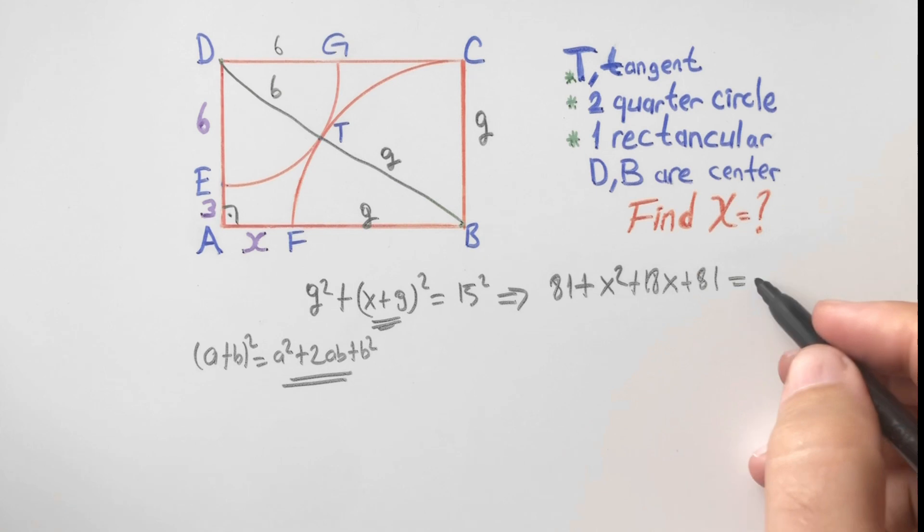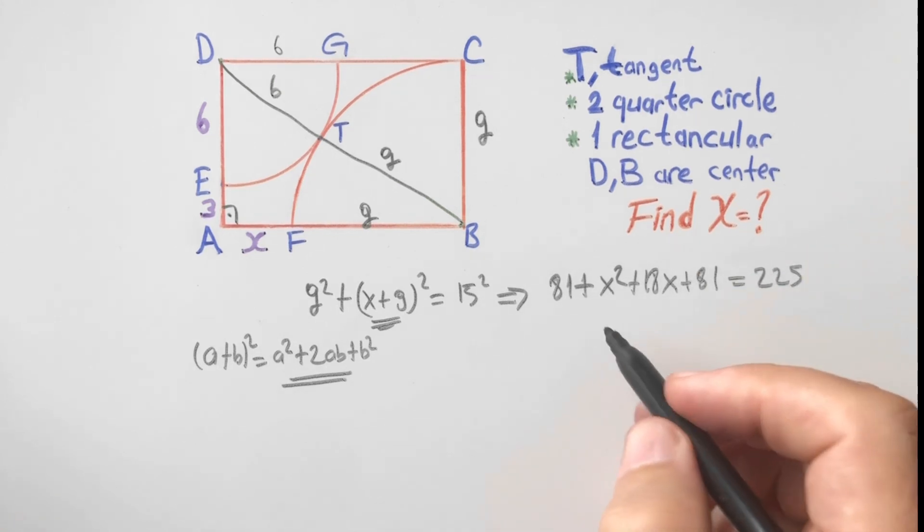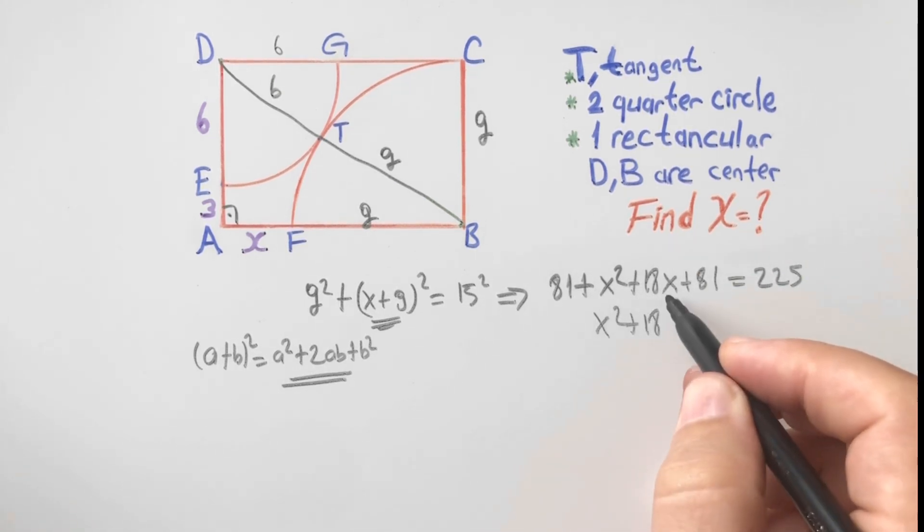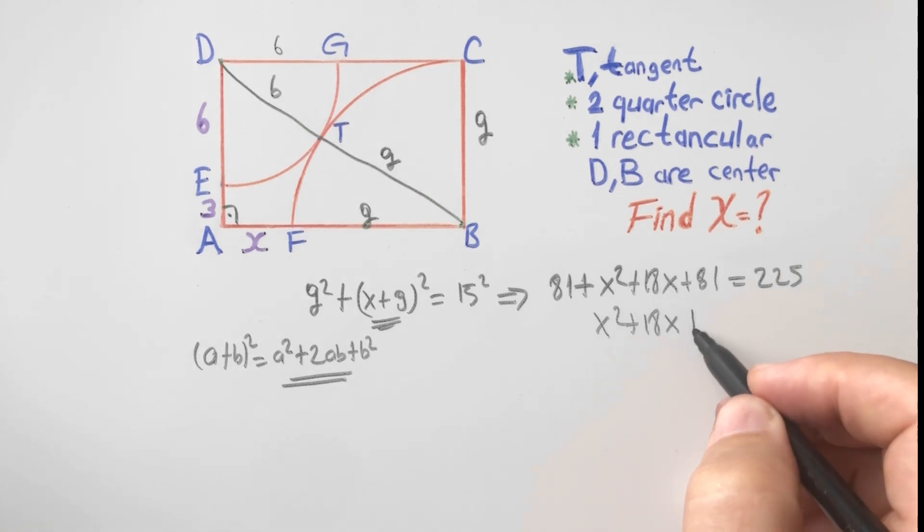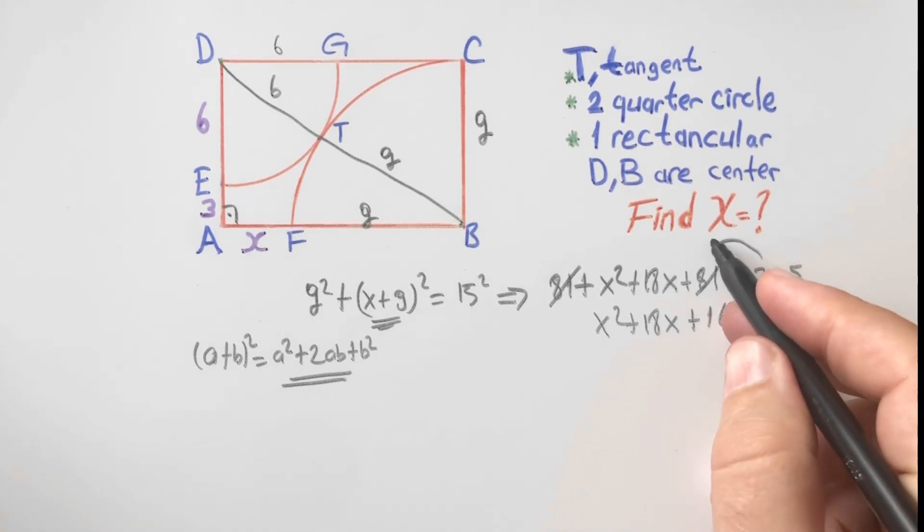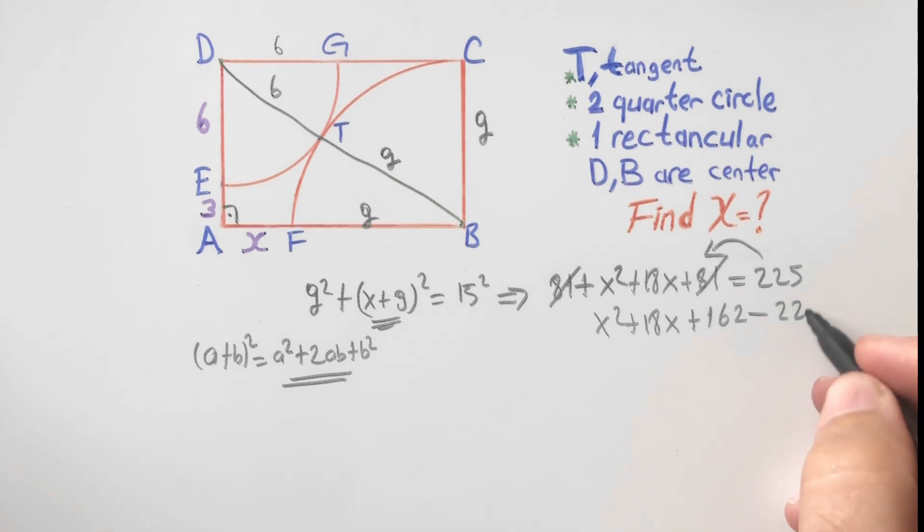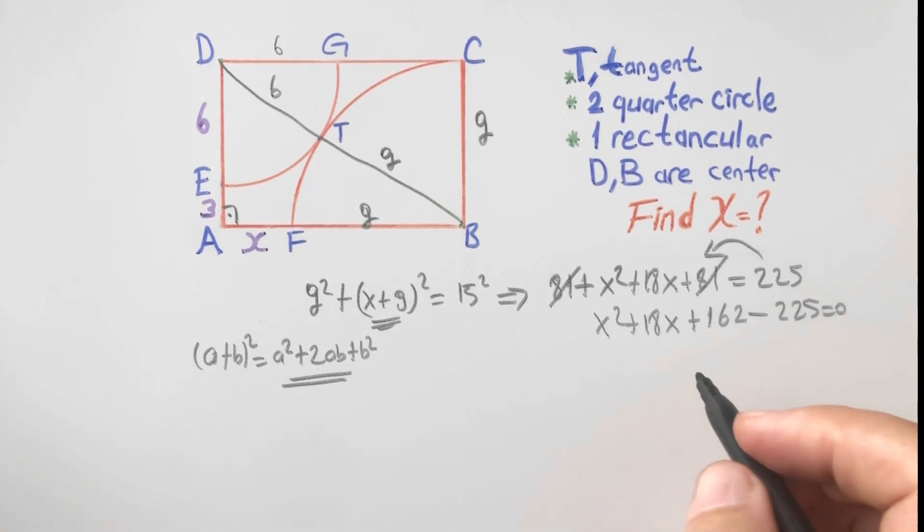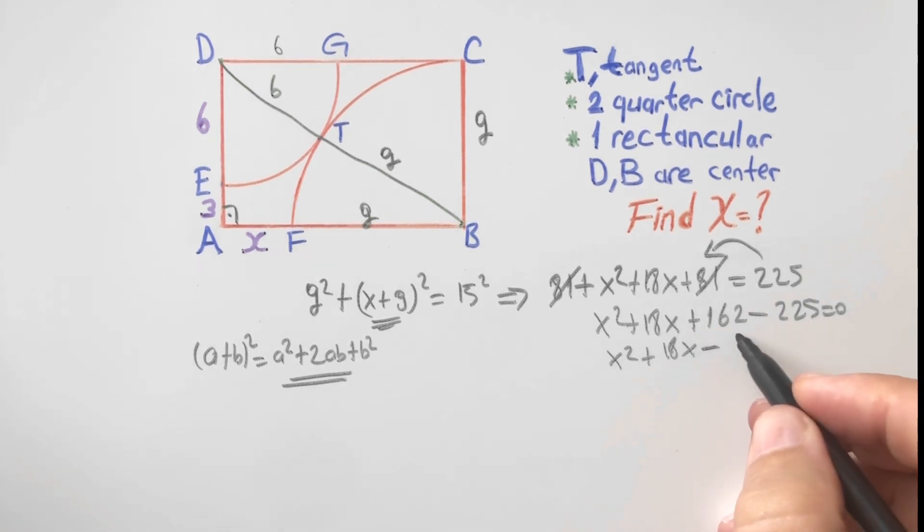Equals 225. X squared plus 18x plus 162 minus 225 equals 0. X squared plus 18x minus 63 equals 0.